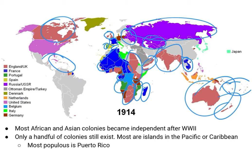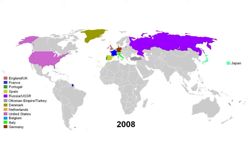In 1914, all of the colonies worldwide — compare that to 2008, colonies that still exist. Less than 100 years later, the colonies had basically dwindled almost to zero. We still have French Guiana, which is a colony of France. There are lots of colonies here in the Caribbean, and some French colonies over here in Southeast Asia and the South Pacific as well. But really, for the most part, all of the colonies are basically gone — almost.